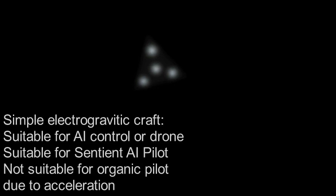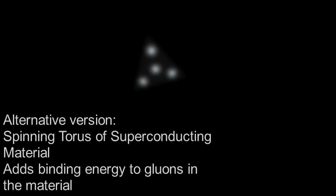So you can get someone in there and fling them around a bit, but they get squished. So what you'd have to do if you want to really accelerate them is put a spinning torus of superconducting material in there. And that adds a lot of energy. It adds a lot of binding energy to the gluons that hold the quarks together in the superconductor.